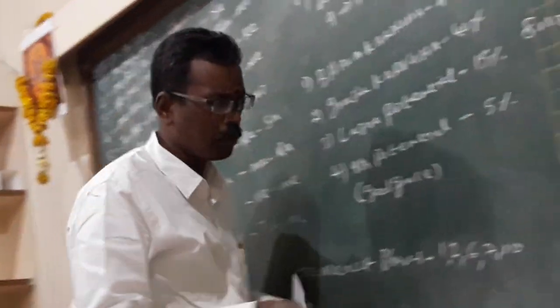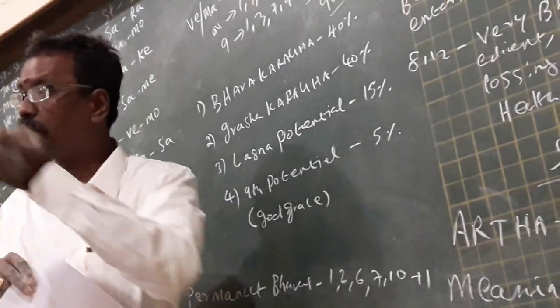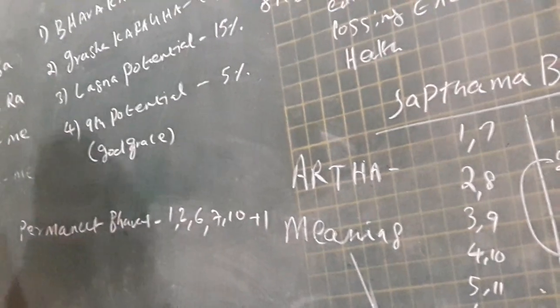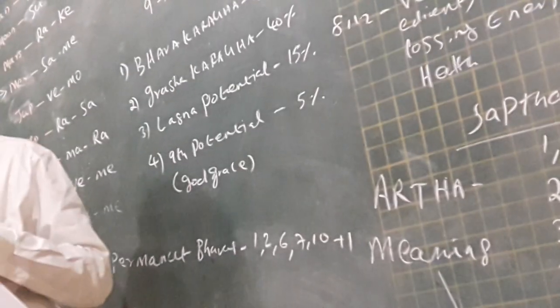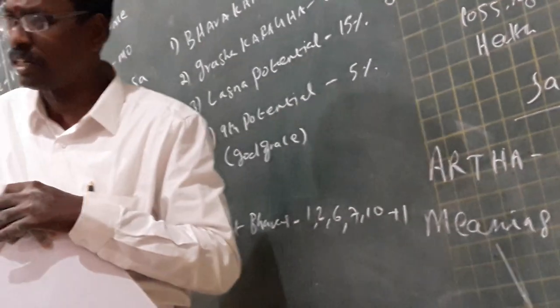We say new hasta. We have to add number one also. Number one means their department. For builder, 4th house also we have to add. For communication people, 3rd house we have to add. For art people, art people means entertainment related job, 5th house should be good.